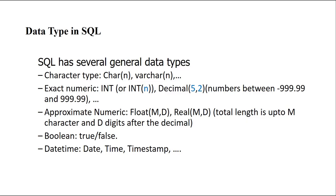In general terms we can classify data types in SQL into five categories. The first is the character type — for example, first name, last name, address. Everything you can type on your keyboard — letters and numbers — are called characters. For representing character data types we have CHAR and VARCHAR. Both pronunciations are used in the literature.